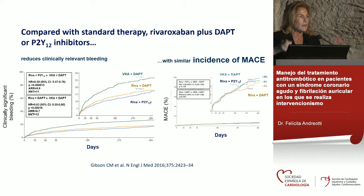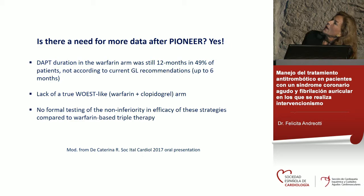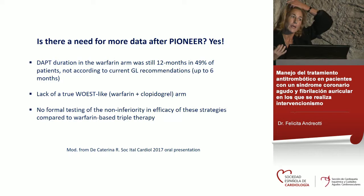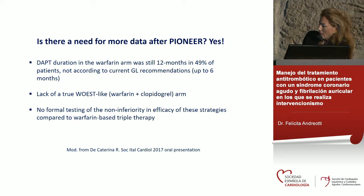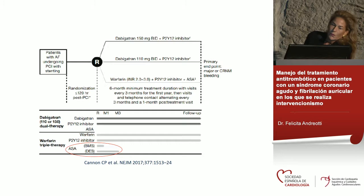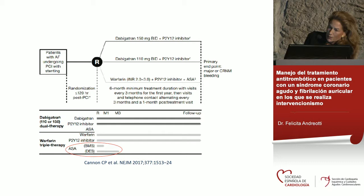For PIONEER, rivaroxaban at the doses studied plus P2Y12 inhibitor, or low-dose rivaroxaban plus DAPT, reduced clinically relevant bleeding compared to standard therapy with a similar incidence of MACE — confirming phase-two trial data. However, the warfarin arm in PIONEER had triple therapy for up to twelve months in a good proportion of patients, which doesn't align with guideline recommendations. There was no true warfarin-clopidogrel arm and insufficient power for efficacy endpoints. RE-DUAL's triple arm had aspirin for one month for bare metal stent or three months for drug-eluting stent.